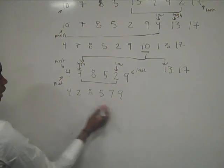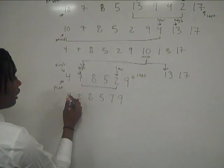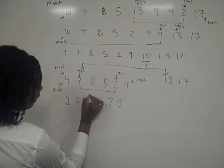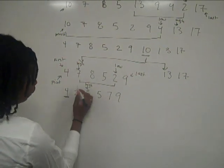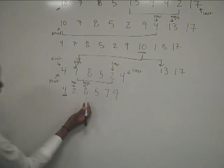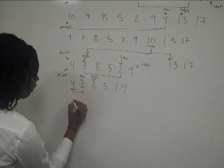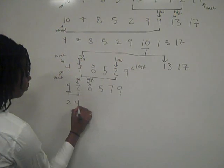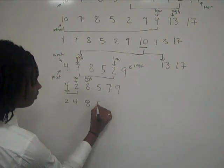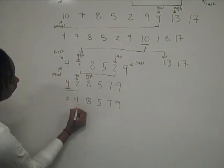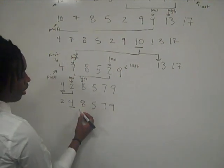Again, you have your first, your last, and your pivot, which is also your first. You look for the number greater than 4 from the left, which is now 8 — your high. And from the right, the lowest is 2. As you see again, the high and the low have surpassed each other, so you swap 2 and 4, which is your low and your pivot. Your pivot is now in place, with values less than 4 on one side and values greater than 4 on the other.